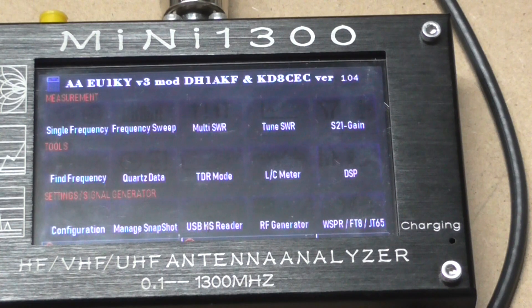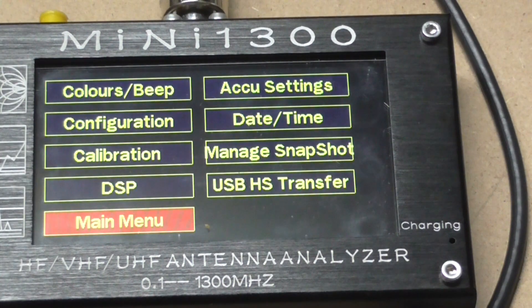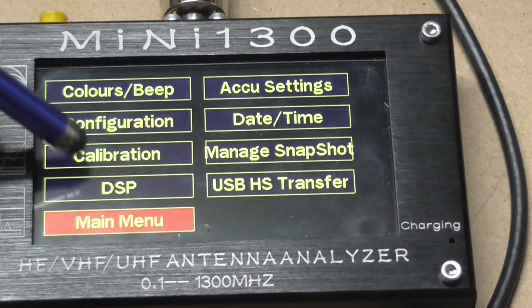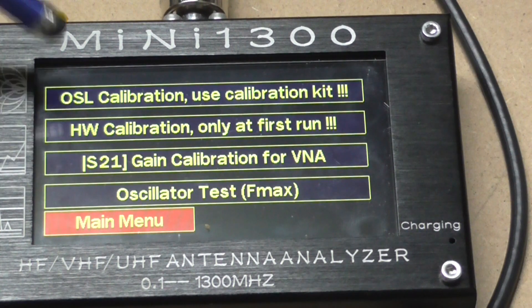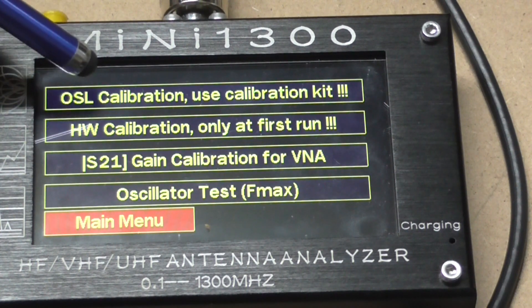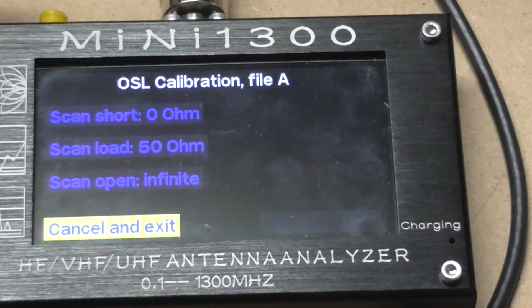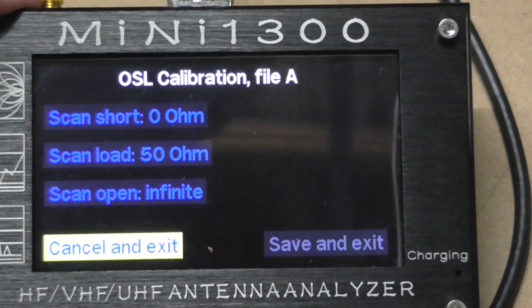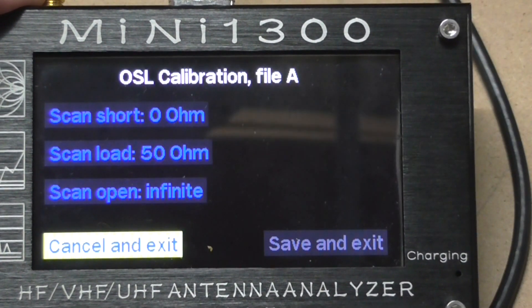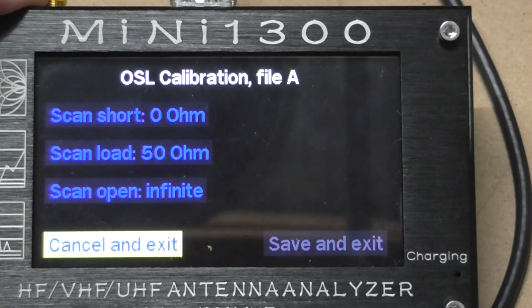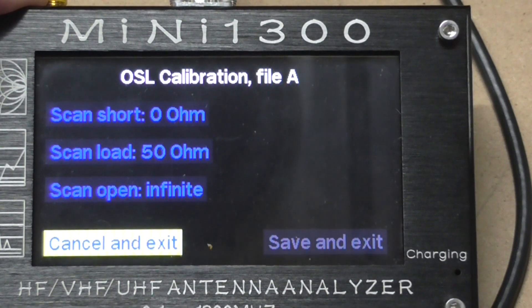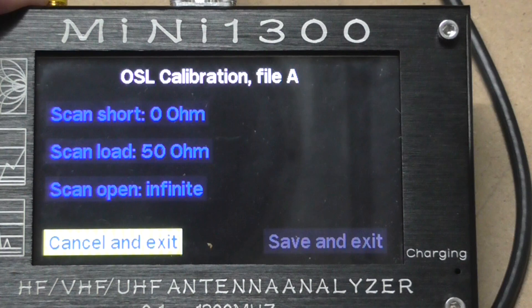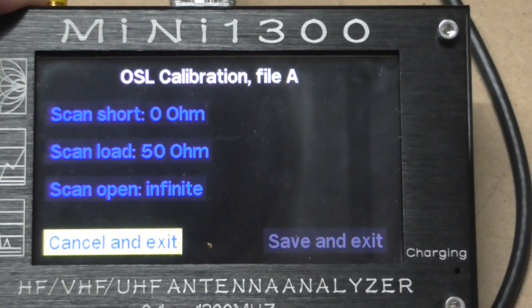Now it has been calibrated - there's three steps to the calibration and that comes in under configuration calibration. What we did is the OSL calibration, and that's where you set it up for 0 ohms, 50 ohms, and open circuit infinite. I've done that with the tools provided by the reseller.